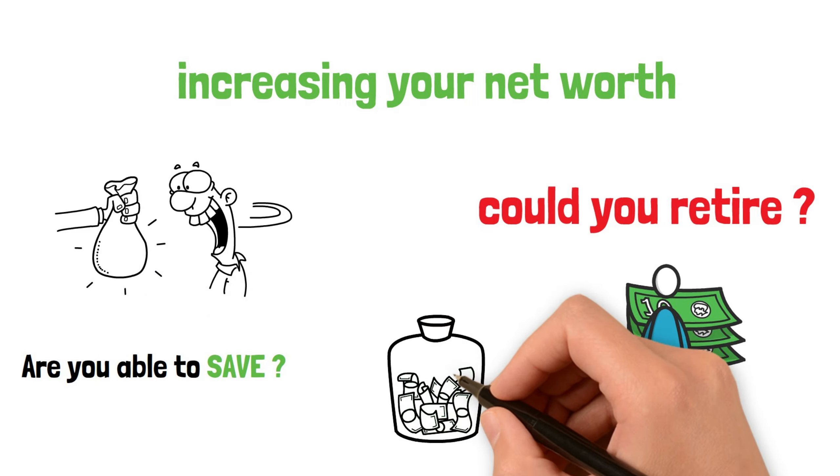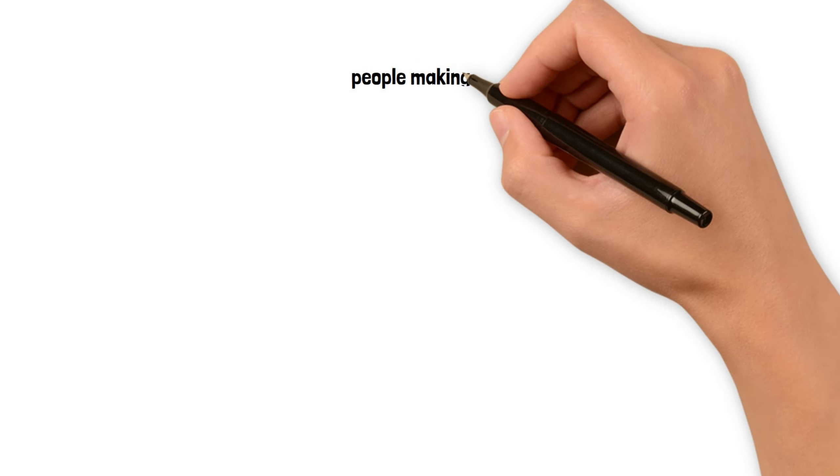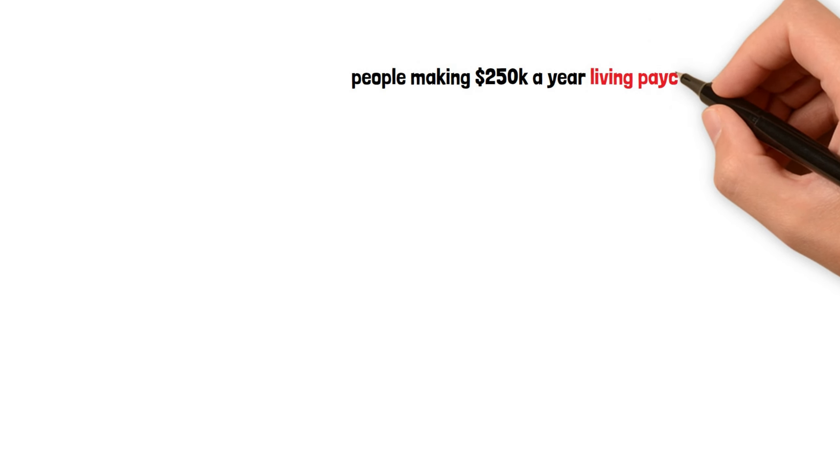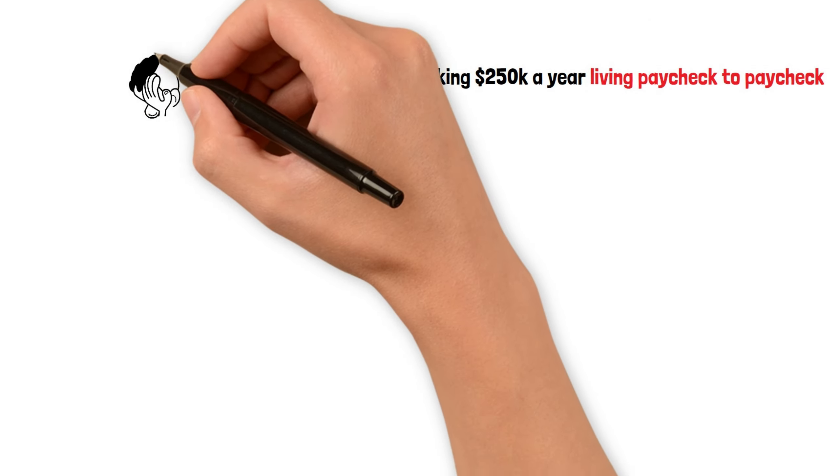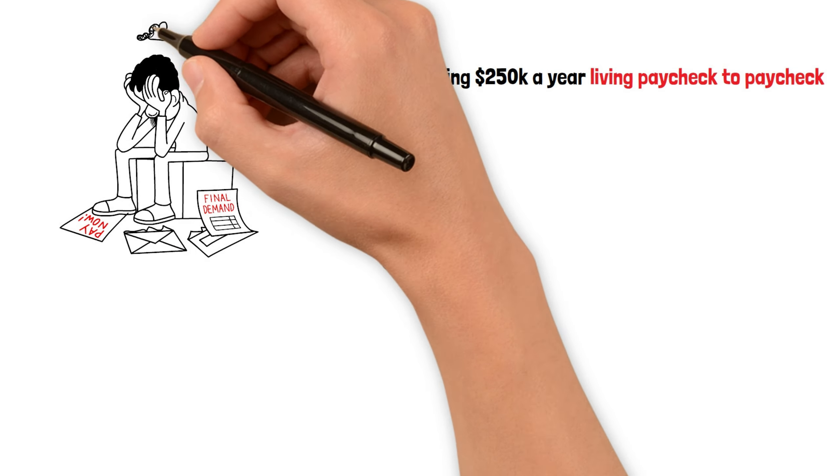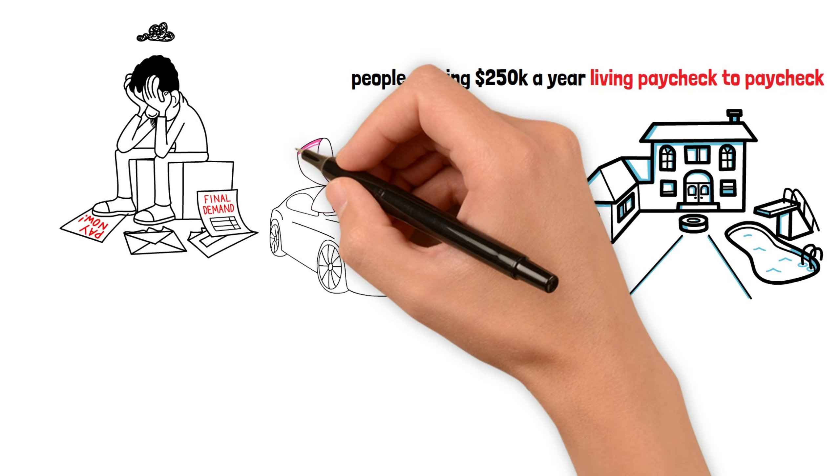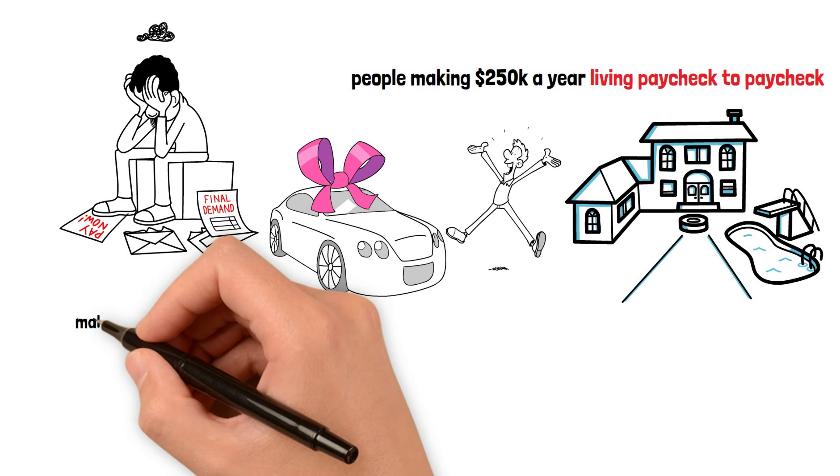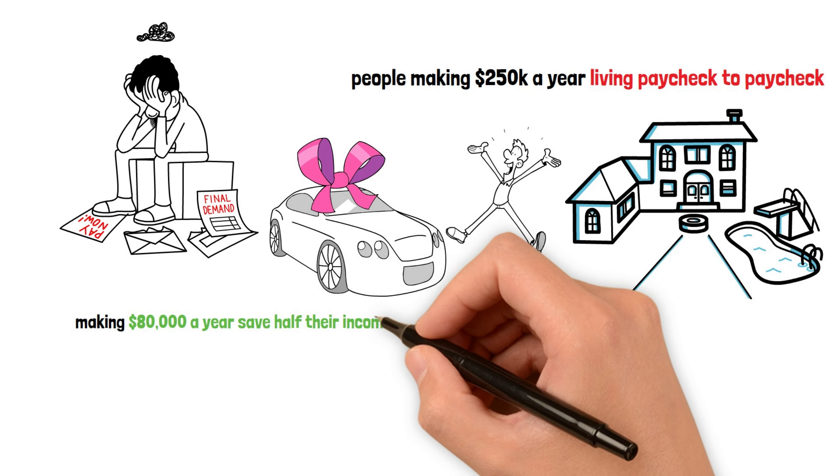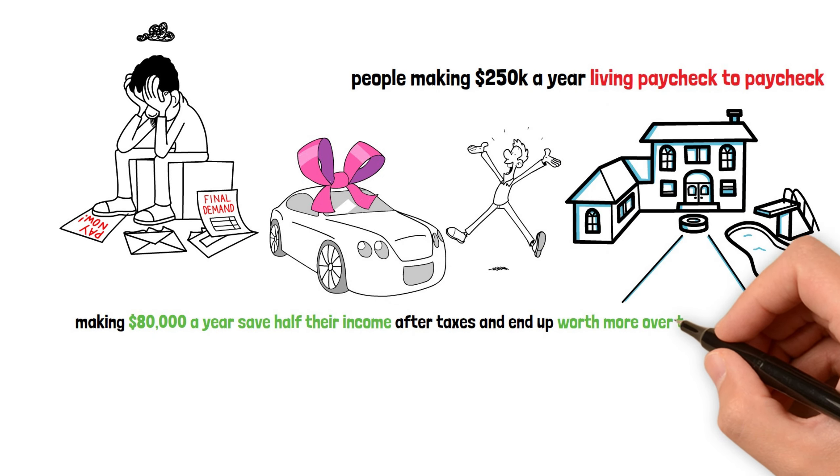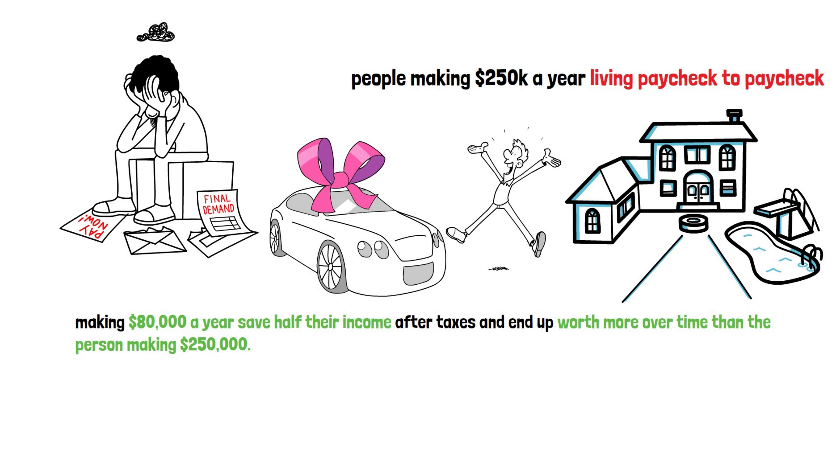I've seen people making $250,000 a year living paycheck to paycheck with nothing to show for it, because they spent it all on lavish vacations or leasing luxury cars, while others making $80,000 a year save half their income after taxes and end up worth more over time than the person making $250,000.